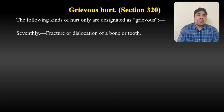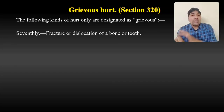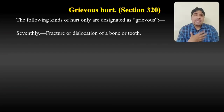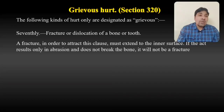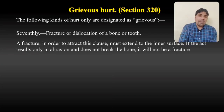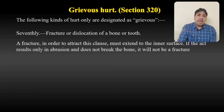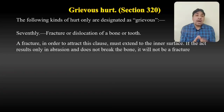The seventh type is fracture or dislocation of a bone or tooth. If I punch someone and knock out a tooth, cause a fracture, break a bone, or dislocate a joint, I will be liable for grievous hurt. A fracture in order to attract this clause must extend to the inner surface. If the act results only in abrasion and does not break the bone, it will not be a fracture. When a bone breaks, that is a fracture, and only then will grievous hurt apply.